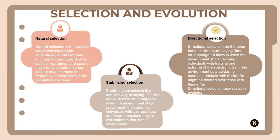Meanwhile, directional selection is like nature saying, time for a change. It kicks in when the environment shifts, favoring individuals with traits at one extreme of the spectrum. So, if the environment gets colder, for example, animals with thicker fur might be favored over those with thin fur. Directional selection may result in evolution.